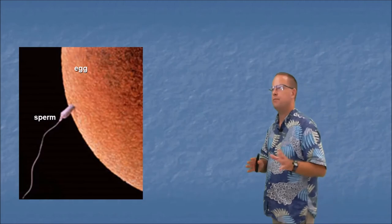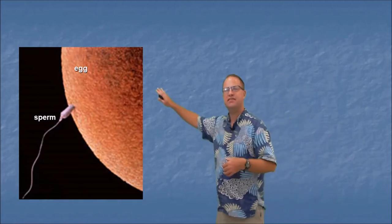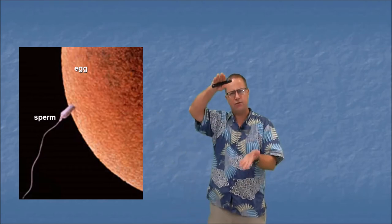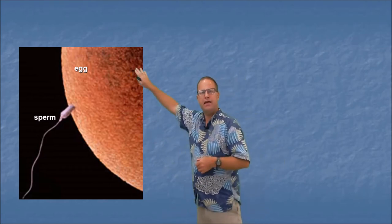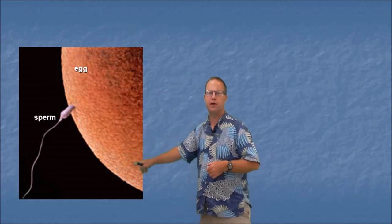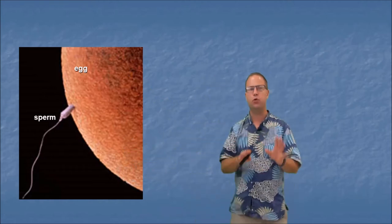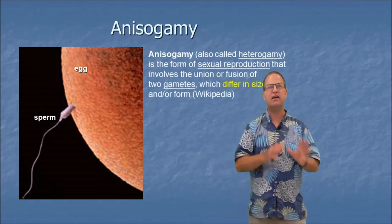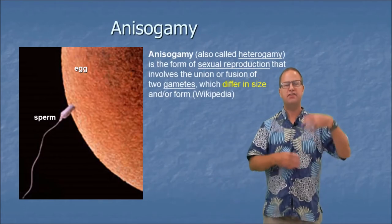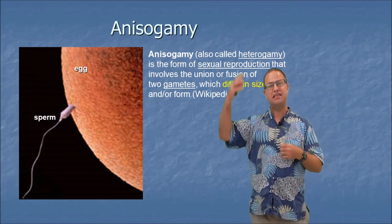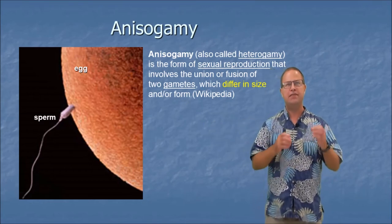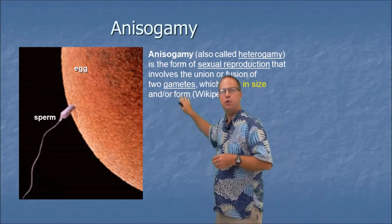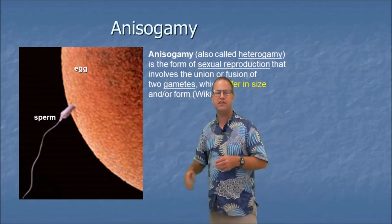While on the topic of gametes, notice anything different between the egg and sperm? The sperm is long with a whip-like tail and a little head, whereas the egg is quite a bit larger — if we drew the whole egg it would take up the majority of the screen. This introduces a phenomenon called anisogamy, meaning one gamete is much larger than the other. The egg is much larger than the spermatozoa, indicating females have a lot more invested in this single fertilization than males do.